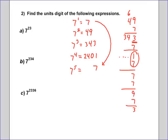7 to the 5th was 7. 7 to the 6th is 9. 7 to the 7th is 3. So now what you see is it's all based upon this pattern right here.